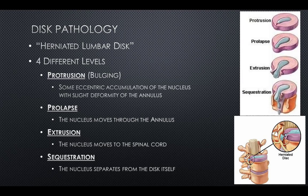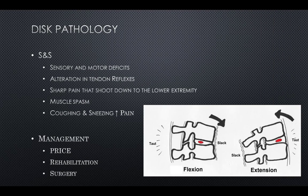There are four different levels of disc herniation: a protrusion or bulging occurs with eccentric accumulation of the nucleus with slight deformity of the annulus; a prolapse is when the nucleus moves through the annulus; an extrusion occurs when the nucleus moves into the spinal cord; and during sequestration, the nucleus separates from the disc itself. Disc herniation is most common at the L4-L5 level. Signs and symptoms include sensory and motor deficits, alteration in tendon reflex, sharp pain shooting down to the lower extremity, muscle spasm, and increased pain with coughing and sneezing. Conservative management with PRICE and rehabilitation is the first course of treatment; if not effective, surgery may be warranted.